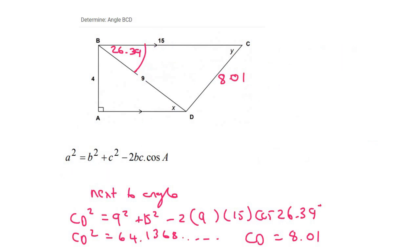Now we could easily use the sin rule, because now we can say that y is opposite the 9, and this 26.39 is opposite the 8.01.